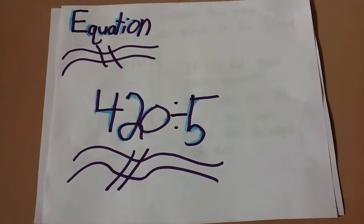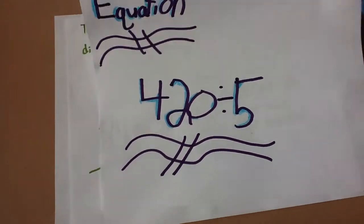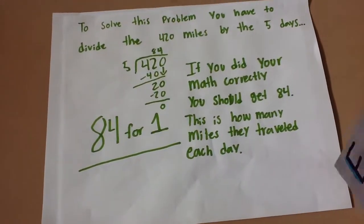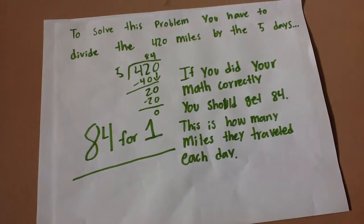The equation is 420 divided by 5. To solve this problem, you have to divide the 420 miles by the 5 days.